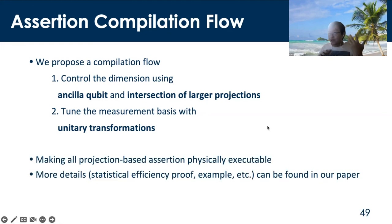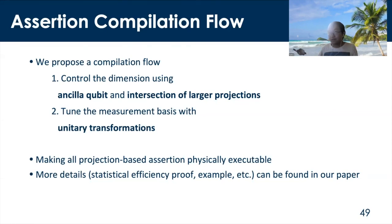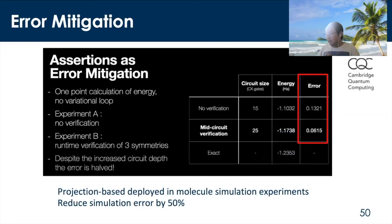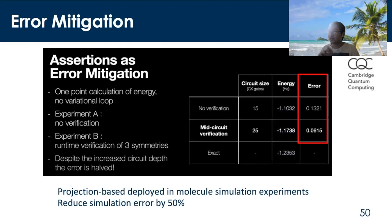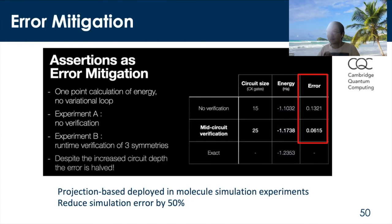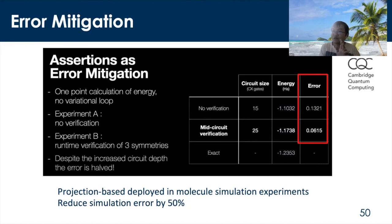By this compilation flow, we are able to make all projection-based assertions physically executable. In our paper you can find many more details with statistical efficiency proofs and many more examples. Another thing to highlight is that by inserting projection-based assertions in the middle of circuits, we can filter out some hardware errors and increase execution fidelity. In an experiment conducted by CQC (now Quantinuum), they placed a projection-based assertion in the middle of their molecule simulation experiment on an ion trap device and found they were able to reduce simulation error by 50 percent.